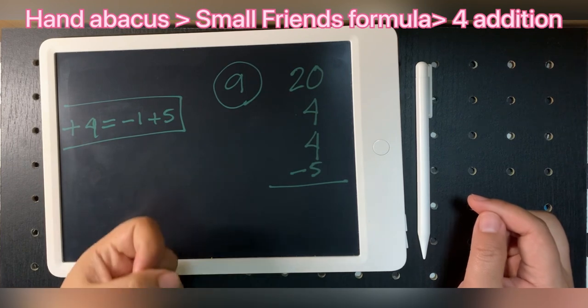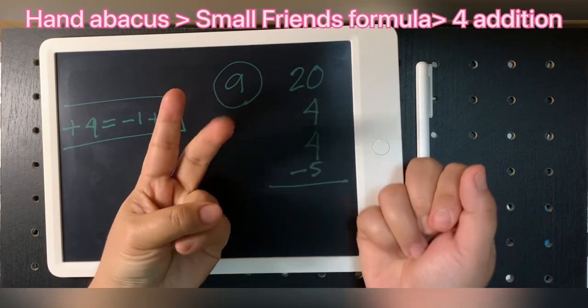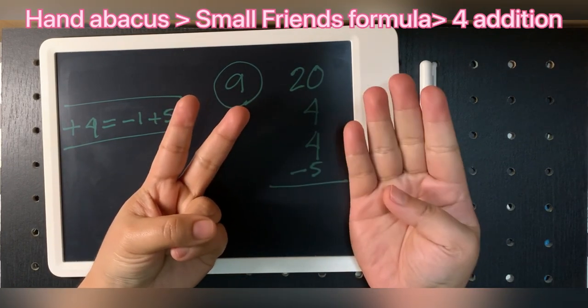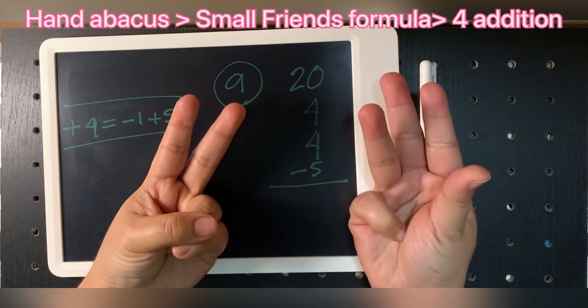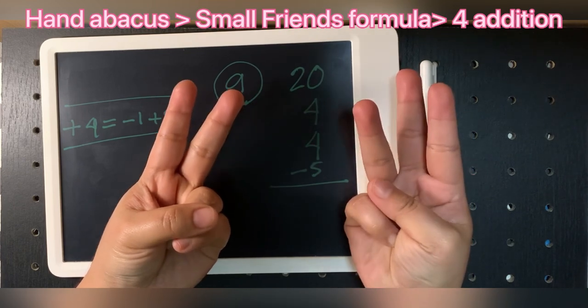Okay, number nine: plus eight, plus four, minus five. Answer is twenty-three.